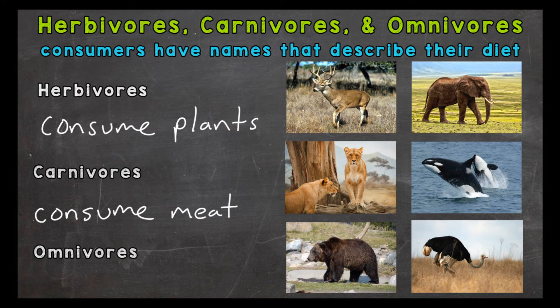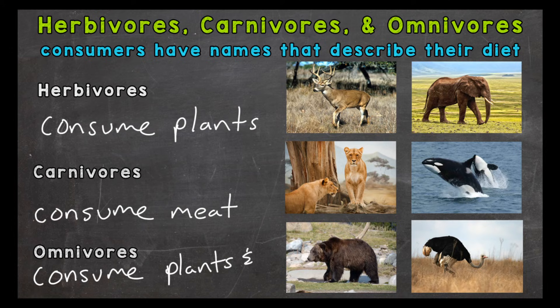Lastly we have omnivores. Omnivores consume plants and meat. Again there's a range in size, and by now we should notice that size does not determine the type of consumer an organism is. Our examples are a grizzly bear and an ostrich. For an example diet, let's take a look at the grizzly bear. As far as plant-based, it likes eating berries, seeds, and grass. As far as meat, it likes eating fish and elk — so plants and meat for omnivores.